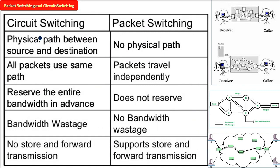The differences between circuit switching and packet switching: Circuit switching is connection-oriented; packet switching is connectionless. Packet switching is unreliable; circuit switching is reliable. In circuit switching, when you call, a permanent physical path between source and destination is established. In packet switching, there is no permanent path — packets may take different routes, but they must ultimately reach the destination.